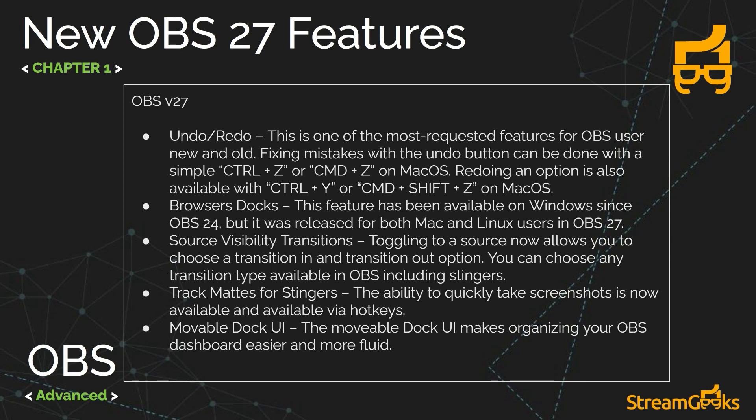OBS 27 added undo and redo, so if you accidentally delete or move something you can go back and forth. Browser docks were already included for Windows users and finally got added for Mac as well. We also got source visibility transitions — one of the favorite new features — which lets you choose a source and set a specific transition in and out based on visibility, so sources can beautifully transition in and out of your OBS scenes. We also got track mats for stingers and a completely movable UI.